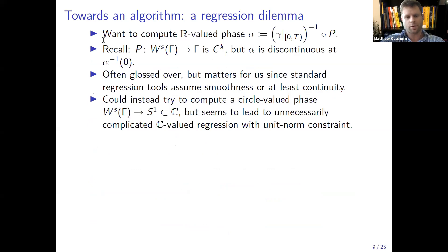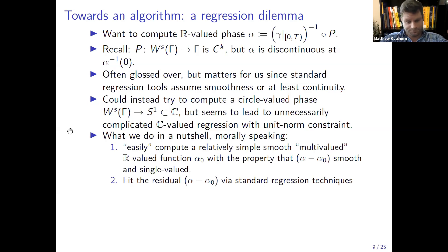So again what we want, we want to compute an R valued phase but we have a problem here. Recall that the geometrically defined asymptotic phase map or even the circle valued asymptotic phase map is as smooth as the vector field, but the real valued phase has this annoying discontinuity at the place where it's zero. This is often glossed over but it really matters for us and it really causes problems early on because standard regression tools or machine learning tools they assume smoothness or at least continuity. We could instead try to compute a circle valued phase which is again as smooth as the vector field, but this also seems to lead to unnecessarily complicated regression problems where you have a complex valued regression and you want to impose a unit norm constraint.